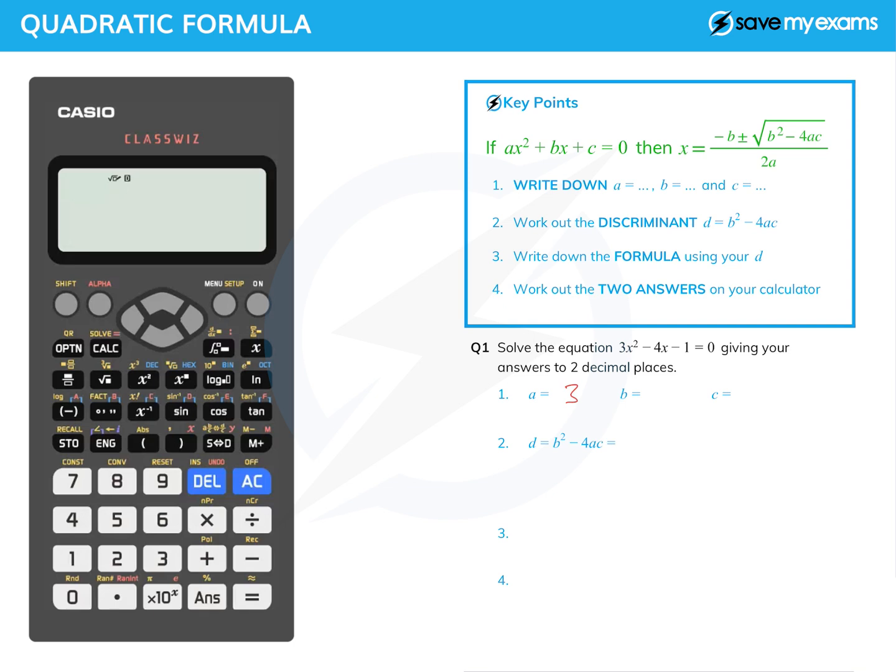b is the number in front of the x, which is minus 4. Don't forget the minus sign. And c is the number at the end, which is minus 1. So far so good.